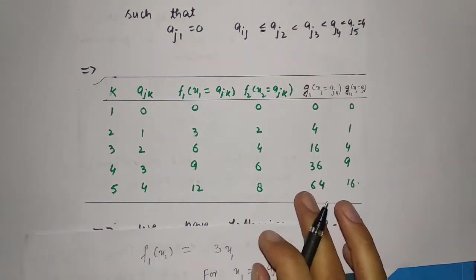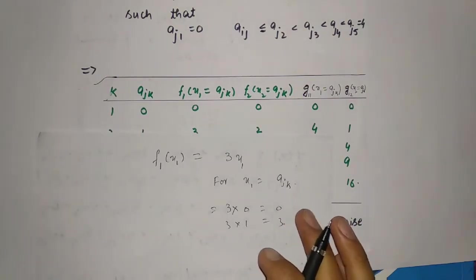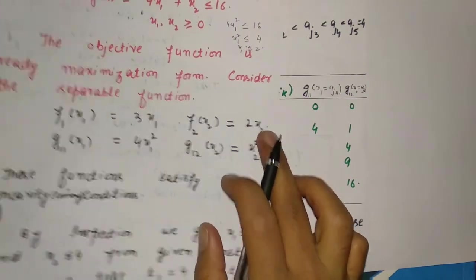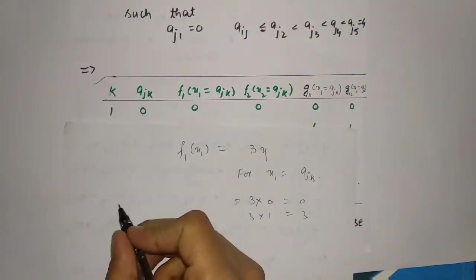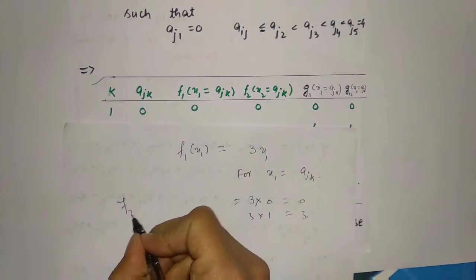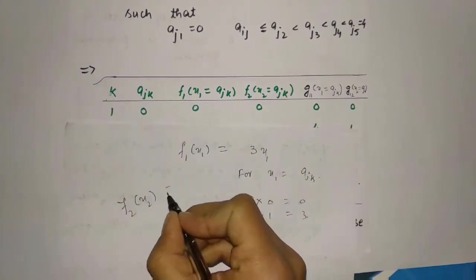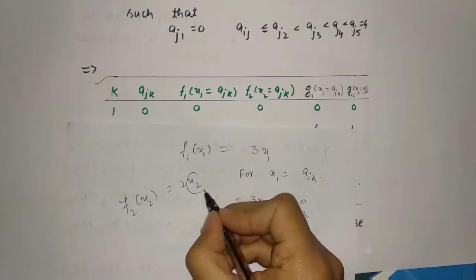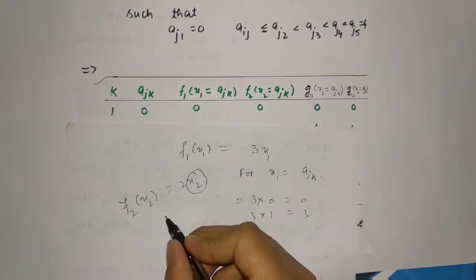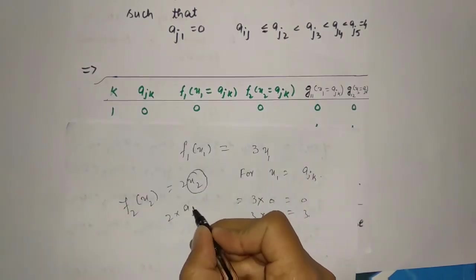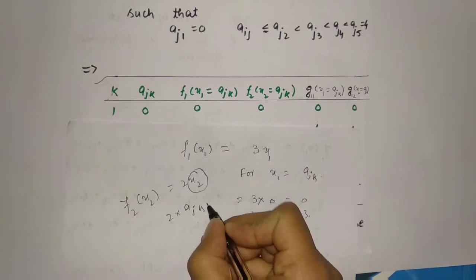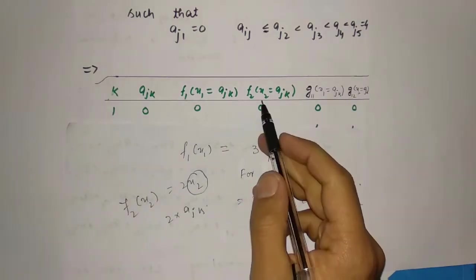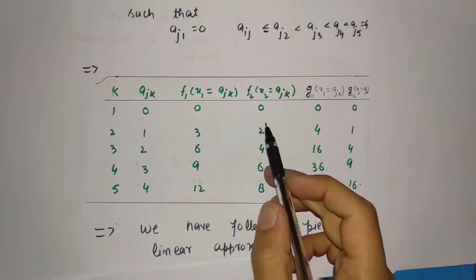In the same way for x₂, since f₂(x₂) = 2x₂, substituting x₂ = a_jk and multiplying each value of a_jk by 2, I get the desired results for this column.